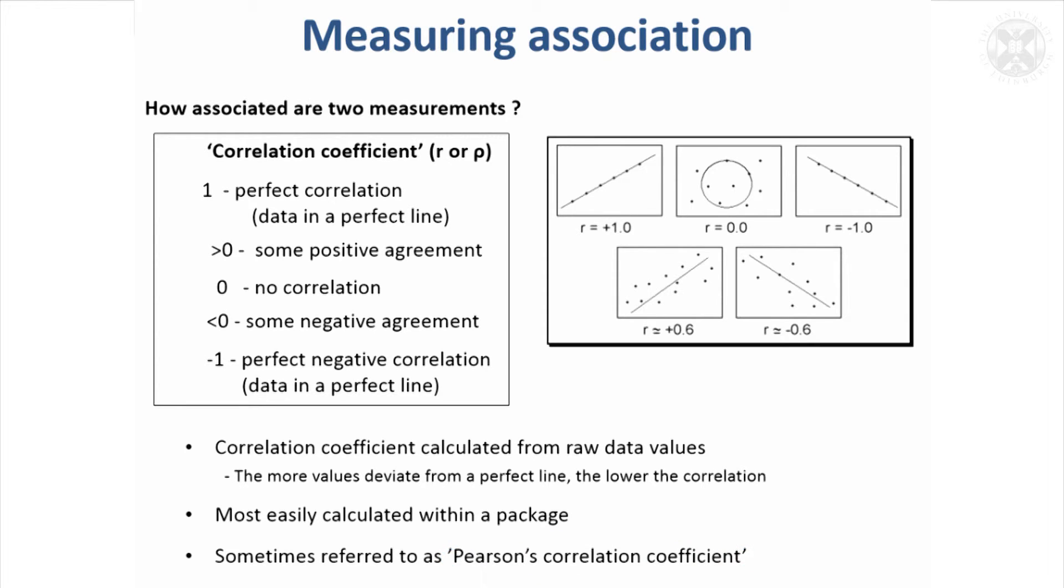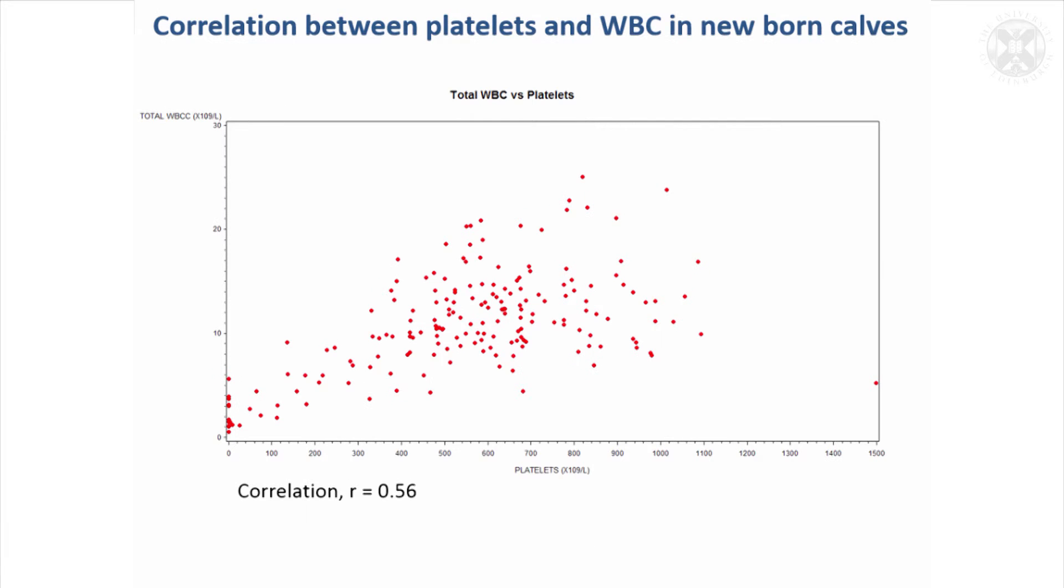However, if your data are really badly distributed because it does assume a fairly symmetrical or normal distribution, if you had an odd distribution, it's useful to know there is another type of correlation available which works with the ranks of the data. Sorry, I'm jumping ahead. I'll just show an example of an ordinary correlation to start with.